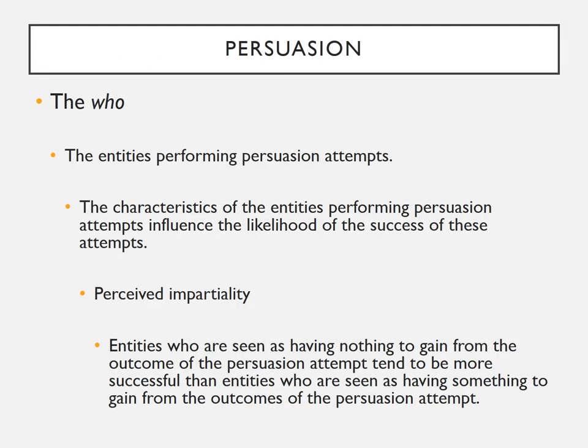Another characteristic that influences persuasion attempts is the perceived impartiality of the entities. In general, entities who are seen as having nothing to gain from the outcome of a persuasion attempt tend to be more successful than those seen as having something to gain. For example, if both your friend and I are telling you to take another one of my courses, your friend doesn't have a vested interest, but I do, since I need students. In that case, your friend will be more successful at persuading you than I would be.